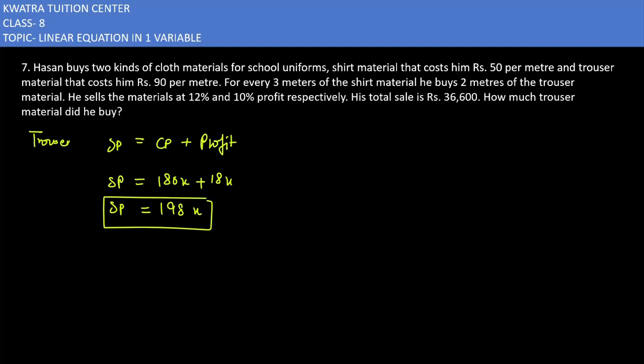Total sale is 36,600. So selling price for trouser is 198x and selling price for shirt is 168x. 168x plus 198x equals 36,600. Adding the left side gives 366x equals 36,600. Canceling, we get x equals 100.